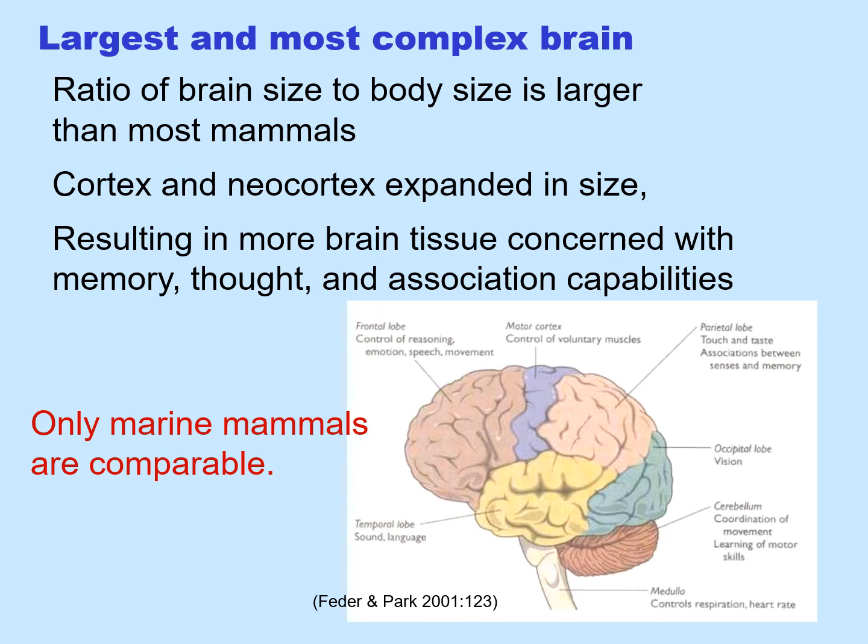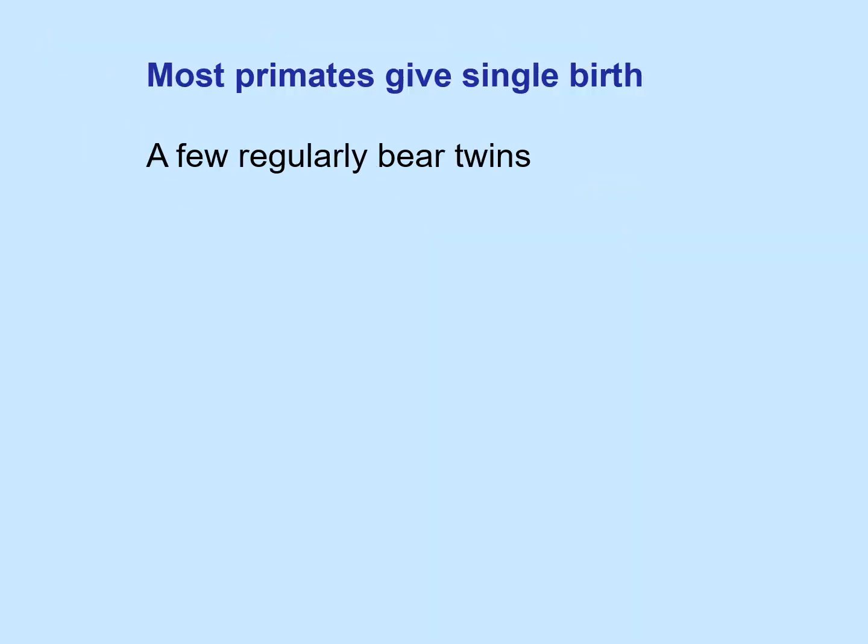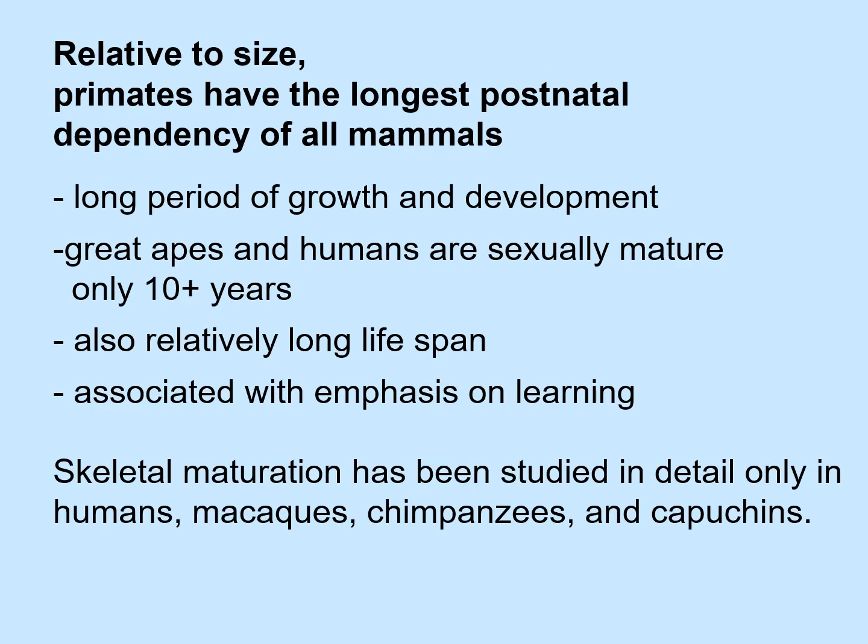Most primates give single birth, although a few regularly bear twins. Relative to size, primates have the longest postnatal dependency of all mammals — a long period of growth and development. Both great apes and humans don't become sexually mature until they are over 10 years old, and we also have a relatively long lifespan. This long period of growth and development is associated with an emphasis on learning. Skeletal maturation has been studied in detail in a few primates, including humans, macaques, chimpanzees, and capuchins.